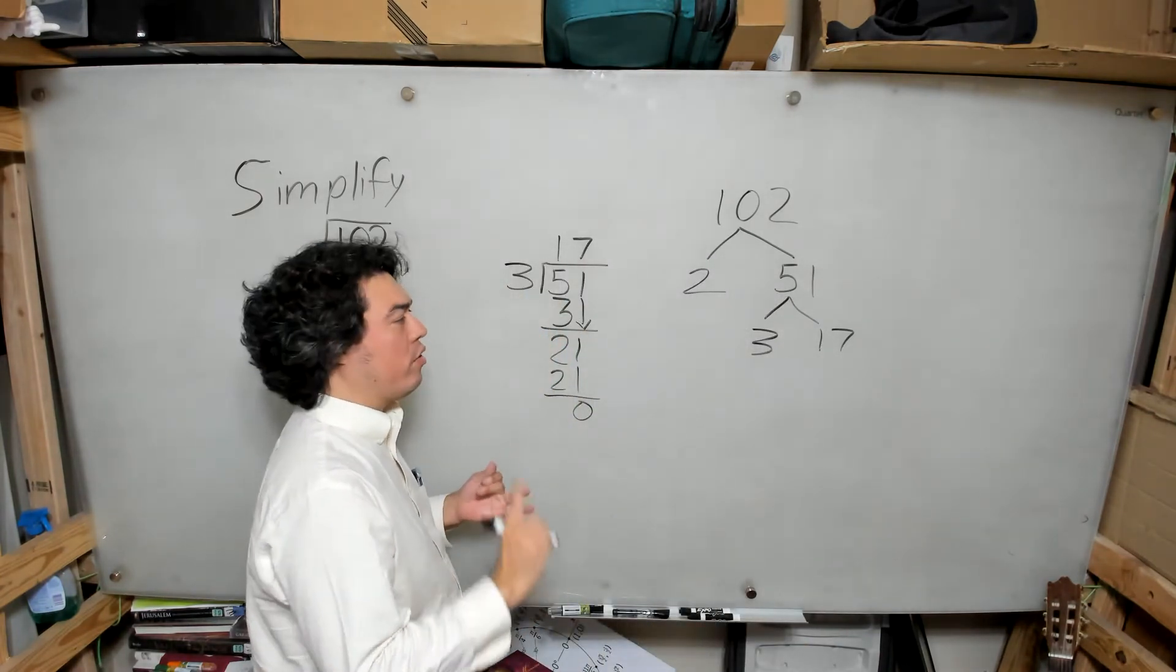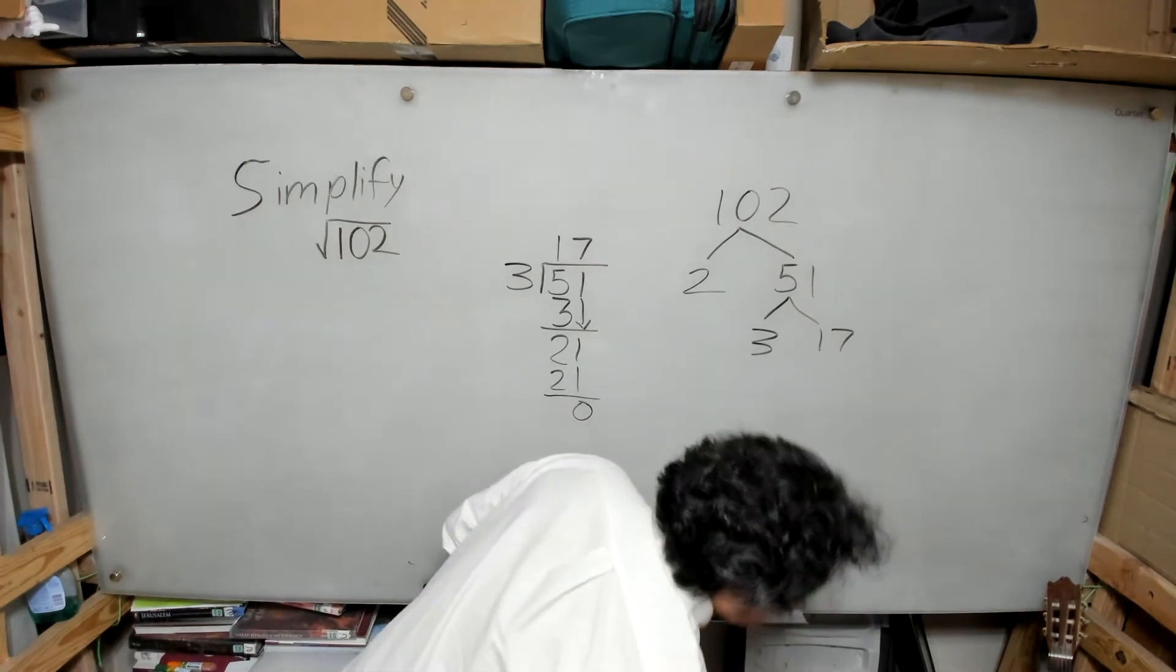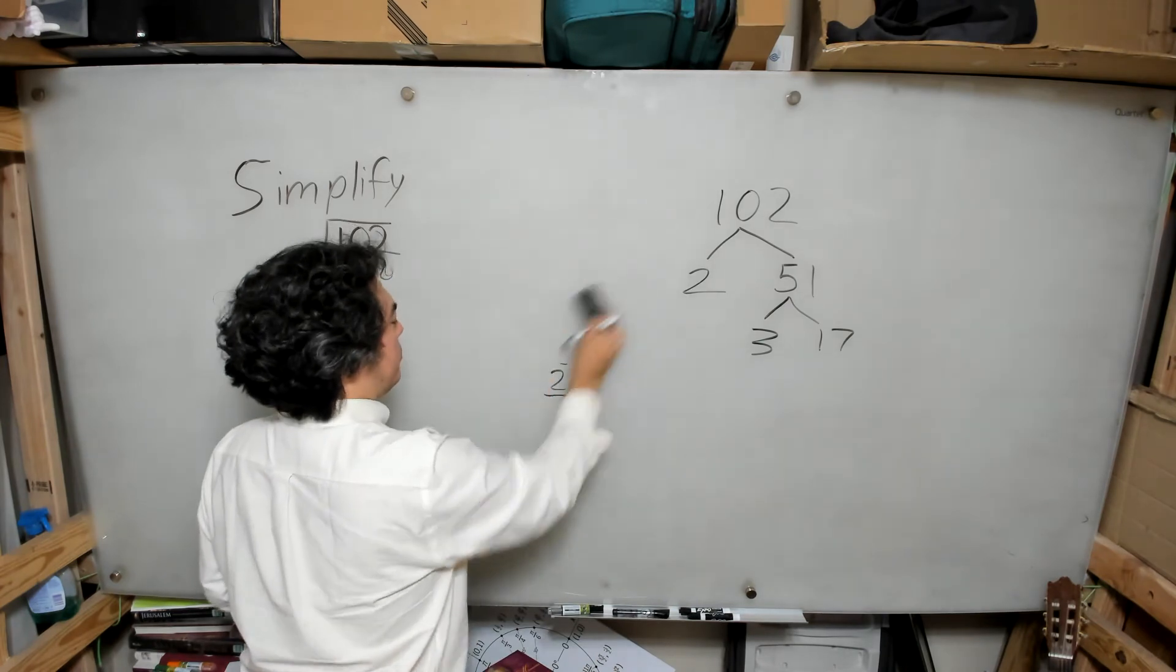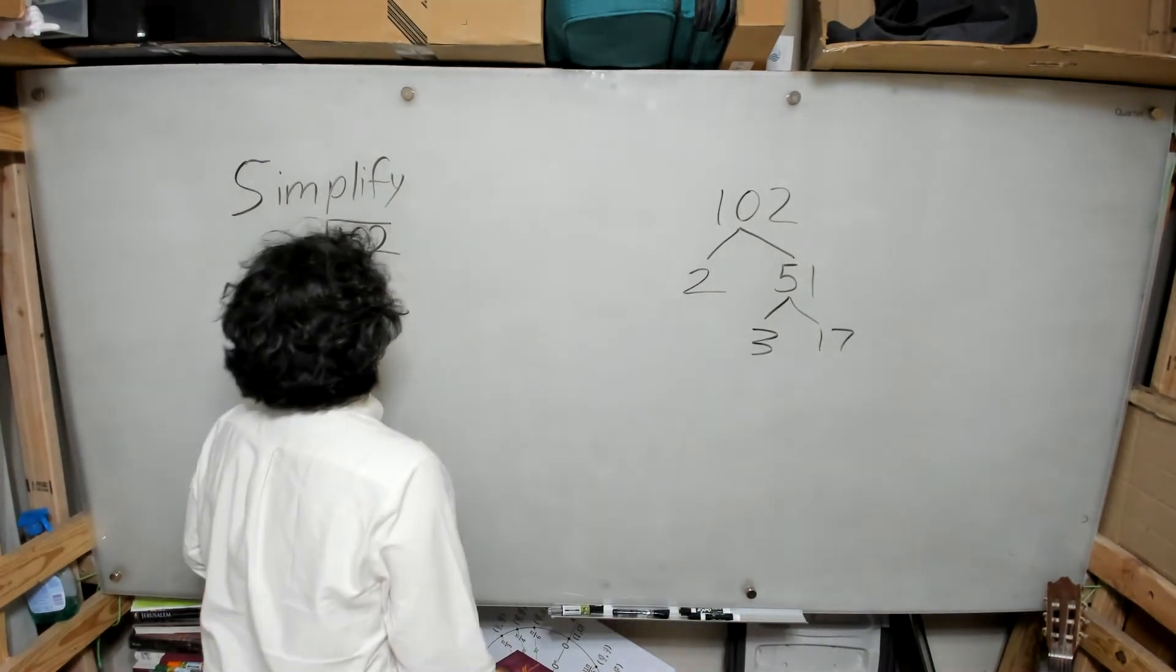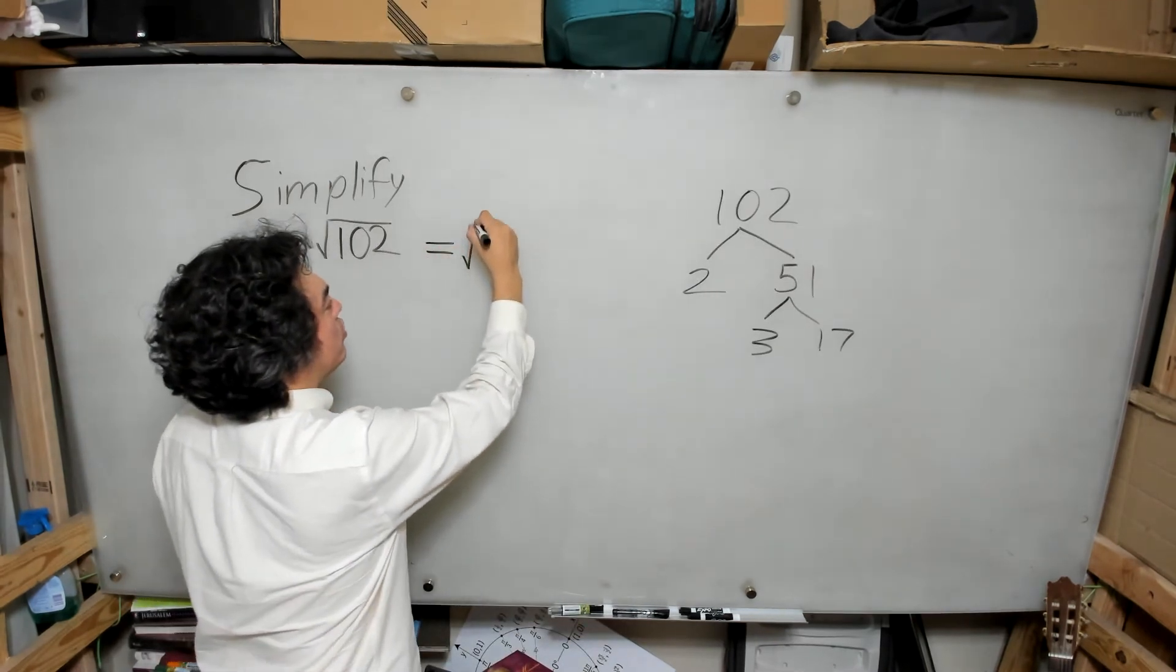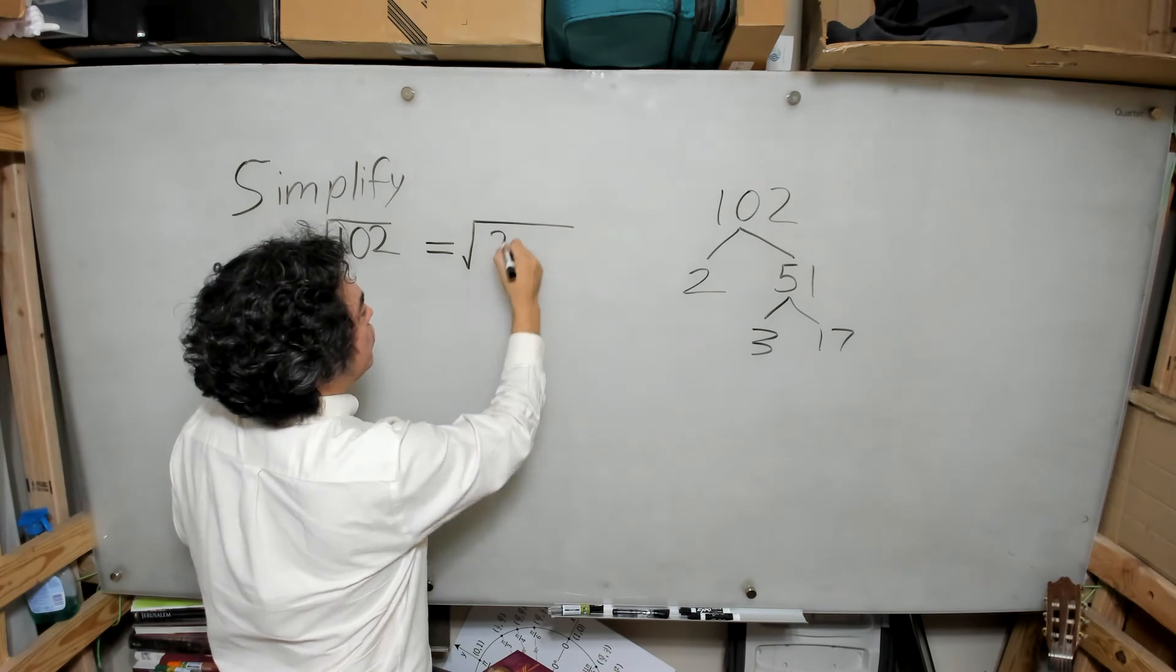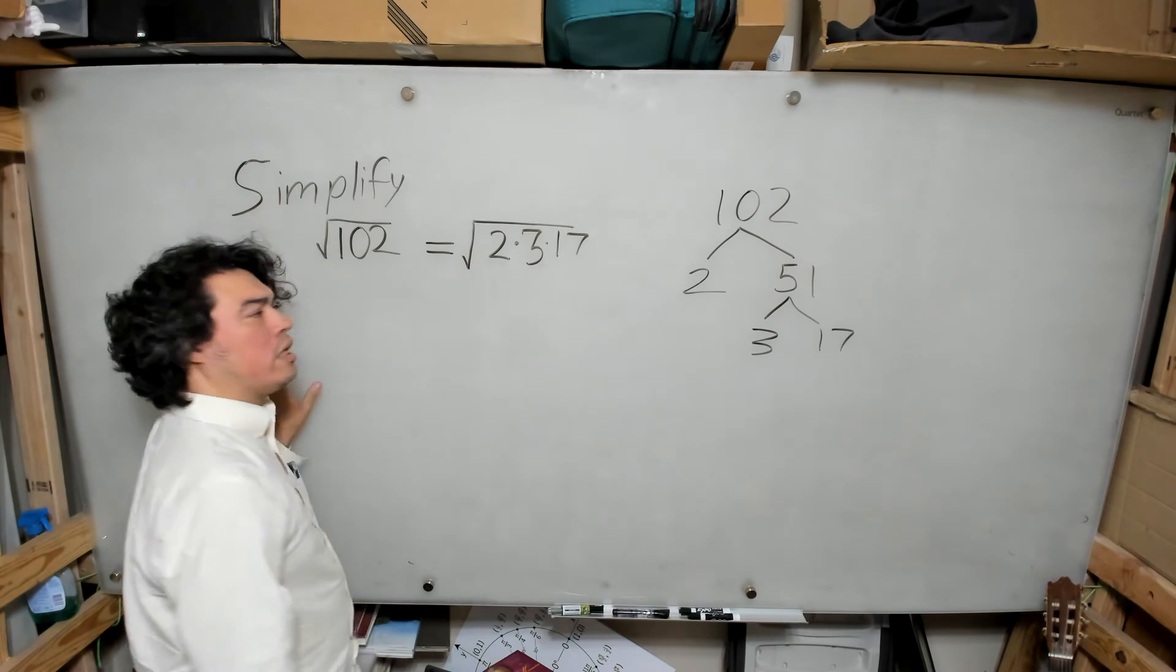Now 17 does not break down further. 3 does not break down further. 2 does not break down further. So I can see here that the square root of 102 can be written as the square root of 2 times 3 times 17.